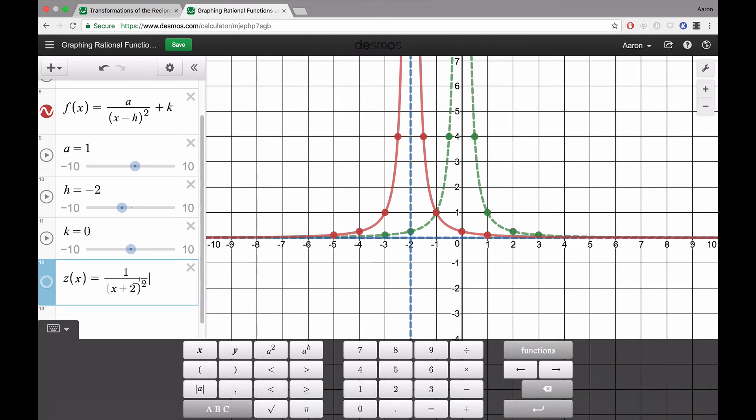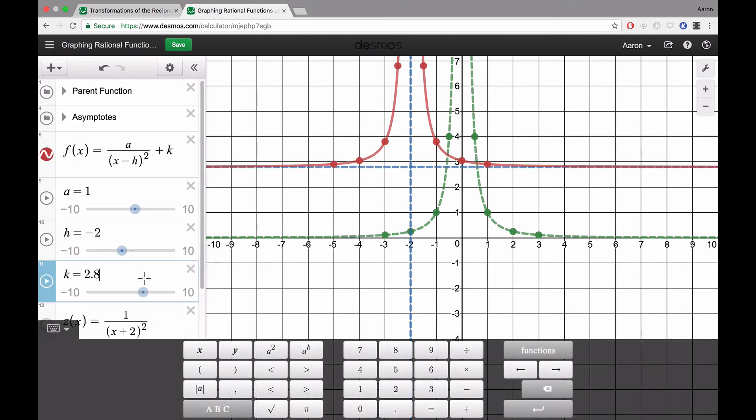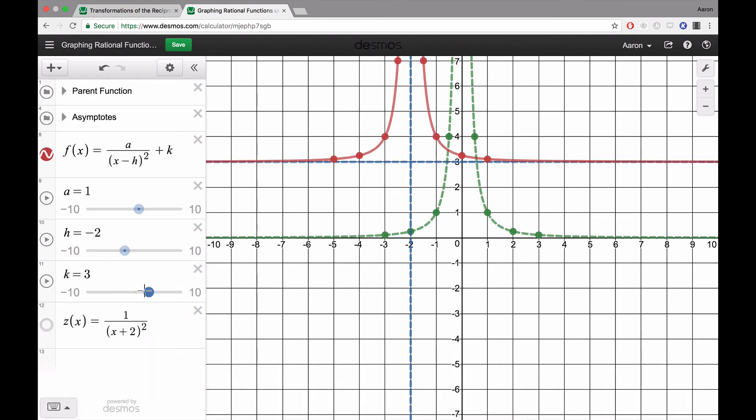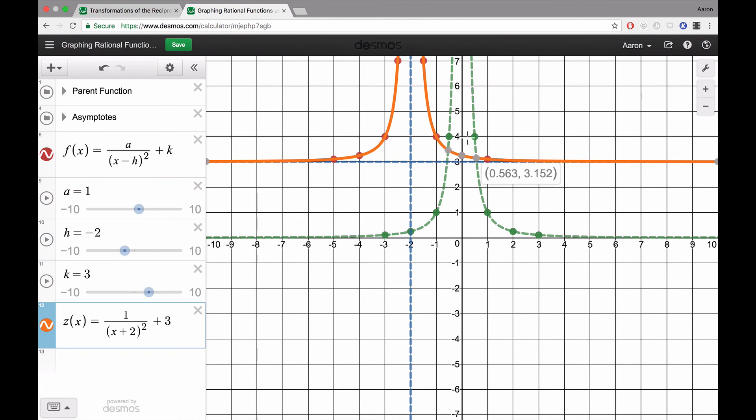Maybe I want to move my graph up or down. I can move it up 3 units, so that would make k = 3. If I did that, plus 3, we can see there's my graph. It's just taken my parent function in green and shifted it left 2 units. That's what the plus 2 does. And then up 3 units. That's what this plus 3 does.